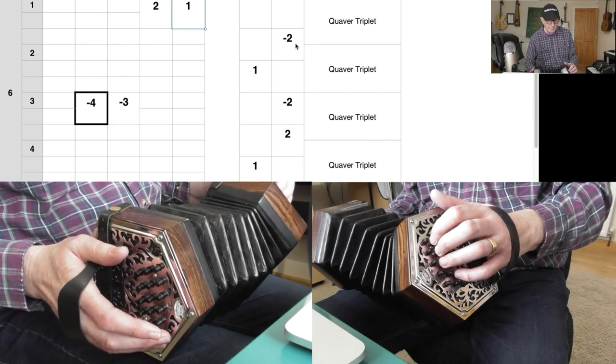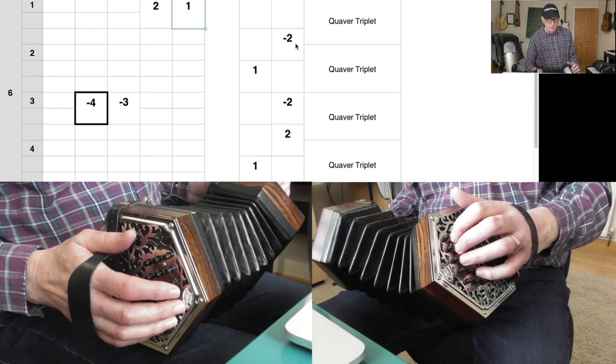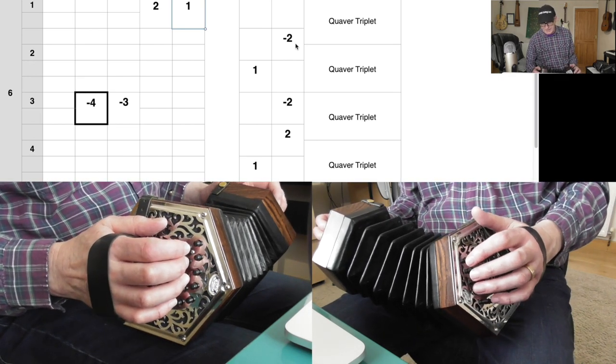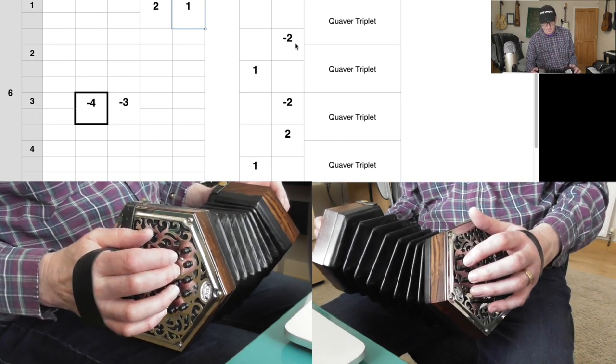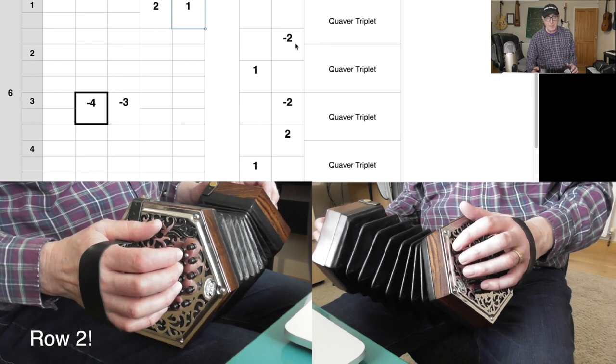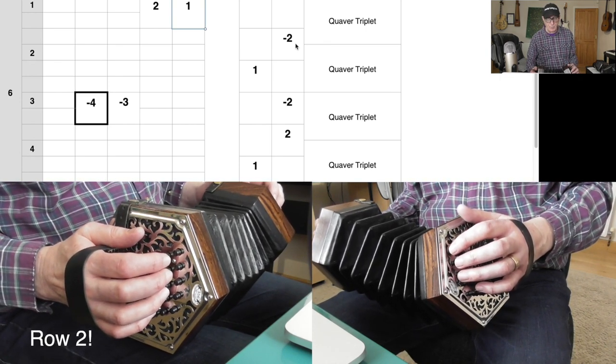And the right hand does this: it's all buttons seven and six, fingers two and one, and it's pull, push, pull, push, push.